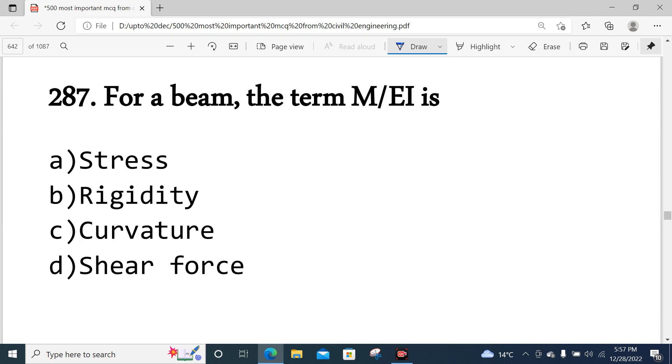Question number 287: For a beam, M/EI is basically the curvature of the beam. Option C is correct.